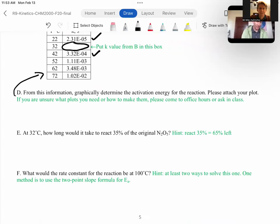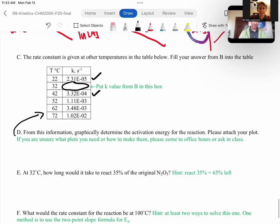For D, it says, from this information, graphically determine the activation energy for the reaction. Please attach this plot. This time, this is what's called an Arrhenius plot and it is related to the Arrhenius equation. There are three different versions of the Arrhenius equation on your conversion and equation sheets. One of them looks like this. K equals AE to the minus EA over RT. That's called the exponential version, the Arrhenius equation. And all three of these versions relate the rate constant to the activation energy and temperature. And this A term, which we don't deal too much with, if you have questions about it, please ask.